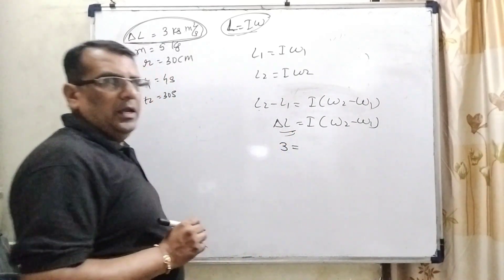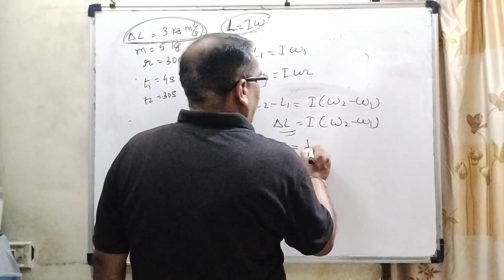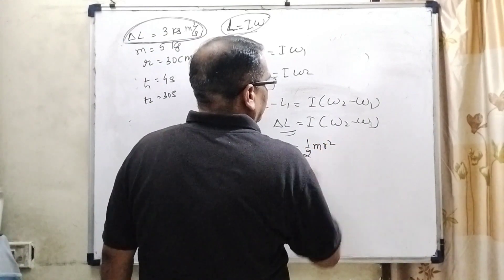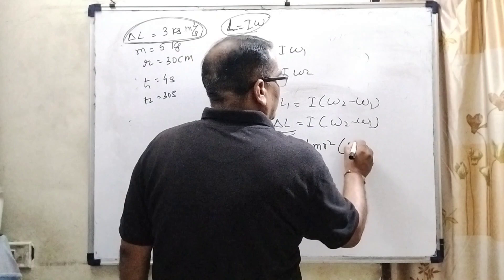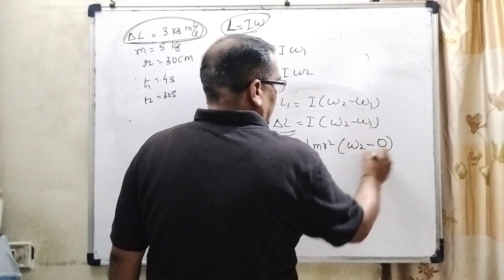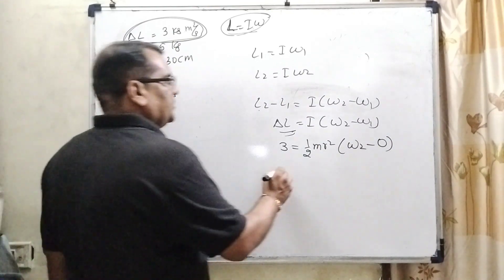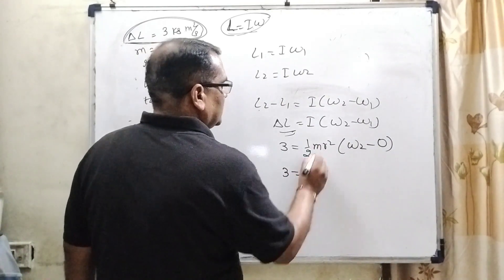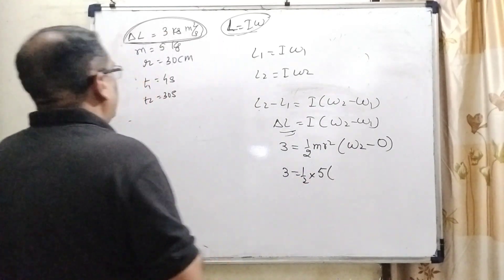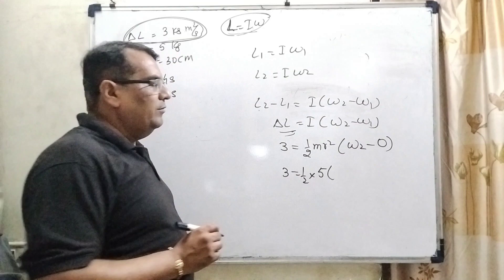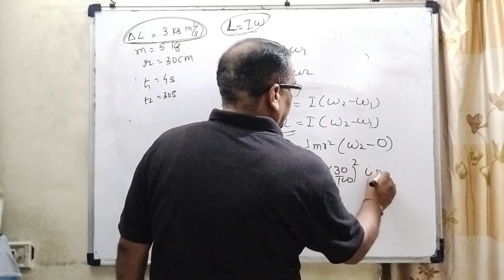And the moment of inertia for the cylinder - we have a cylinder, so it's ½MR². This is the moment of inertia of the cylinder. ω₂ and ω₁, where initial value ω₁ is 0 because it is at rest. So now substitute all the values. Mass is 5 kilograms, and radius is 30 centimeters. Converting to meters, that's 30/100, and we have ω₂.